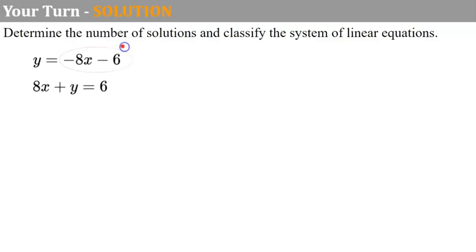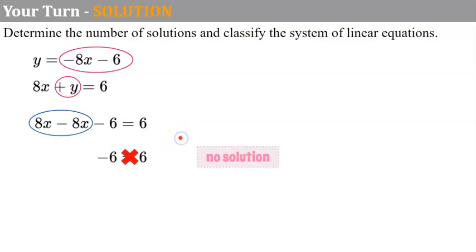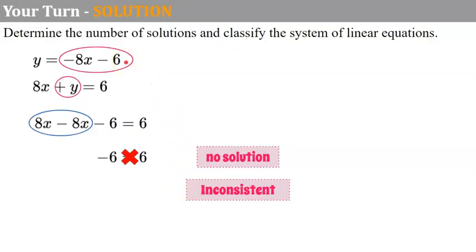Welcome back. I'll use substitution since one equation is solved for y. I replace y in the second equation with the expression negative 8x minus 6. That gives me 8x minus 8x minus 6 equals 6. Combining like terms, 8x minus 8x is 0, leaving negative 6 equals 6, which is not a true statement. Therefore, there is no solution to the system. It's inconsistent, and if graphed, the lines would be parallel.